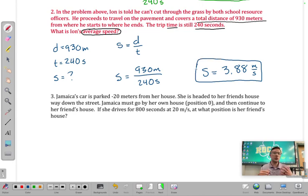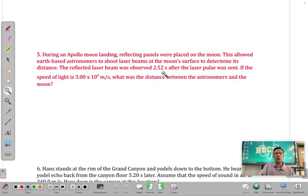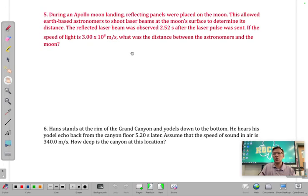So that one's a little bit easier because it actually just told us the distance that he traveled. It didn't give us an initial and a final position. Our last example is actually going to be number five. So skip ahead to the next page and look at this one here with me. This one is a little bit tricky and often tricky problems on our practice problems end up showing up later, potentially as an extra credit problem or it might just be on the test. It says during an Apollo moon landing, reflecting panels were placed on the moon. This allowed Earth based astronomers to shoot laser beams at the moon's surface to determine the distance. The reflected laser beam was observed 2.52 seconds after the laser pulse was sent. If the speed of light is 3 times 10 to the 8 meters per second, which it is, that's 300 million meters per second. What is the distance between the astronomers and the moon?